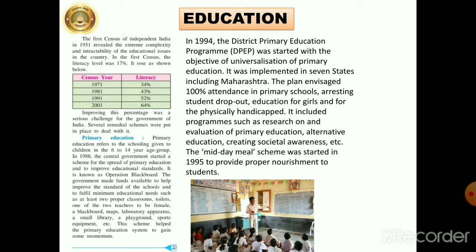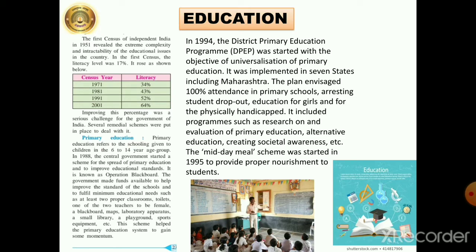The midday meal scheme was started in 1995 to provide proper nourishment for the students. This scheme also attracted children to school — the view being that children may come to school at least to eat, as they would get properly nourished food. This scheme was also started to attract children to school. Primary education was made compulsory for the age group of 6 to 14 years.